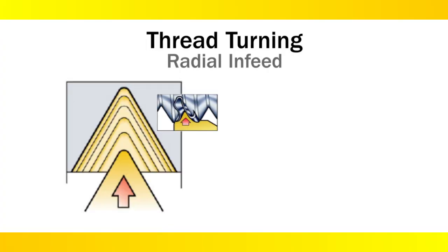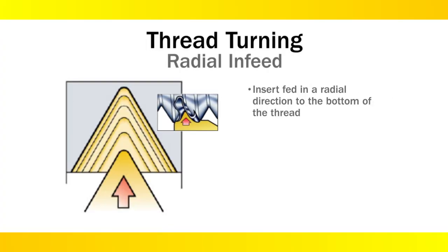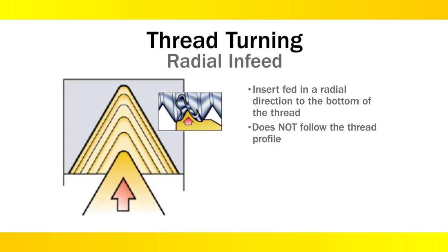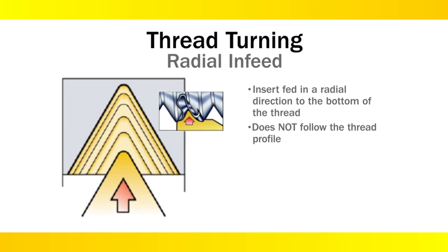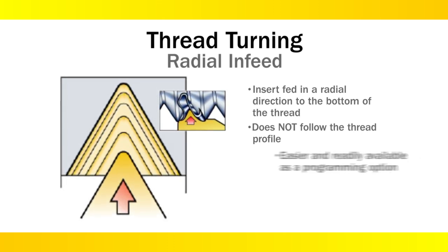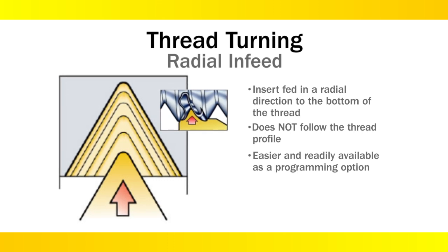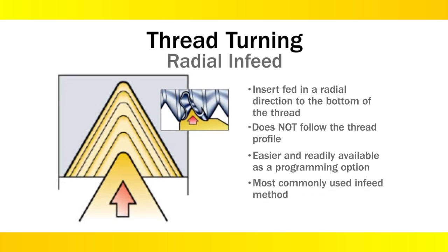For radial infeed, the insert is fed in a radial direction to the bottom of the thread. It does not follow the thread profile like modified flank or incremental infeed. The benefit is even insert wear. This method is also simpler and more readily available as a programming option on machine tools and CAM software, making it the most commonly used infeed method.